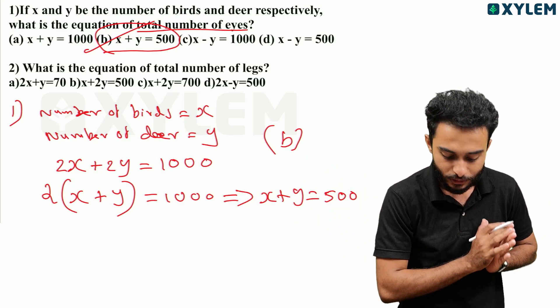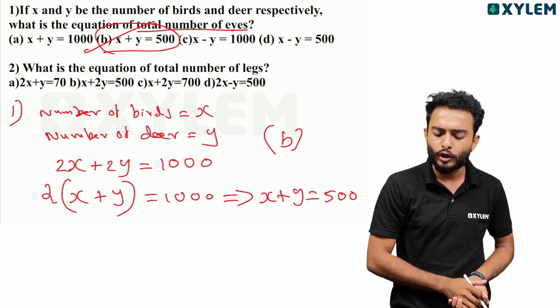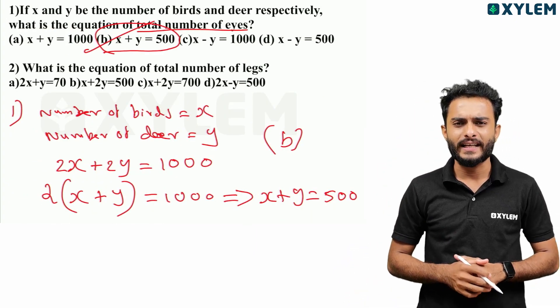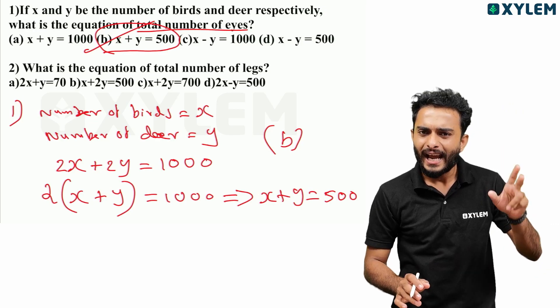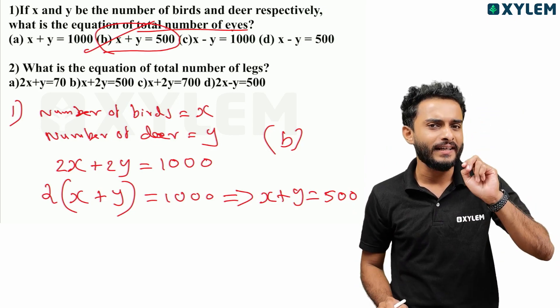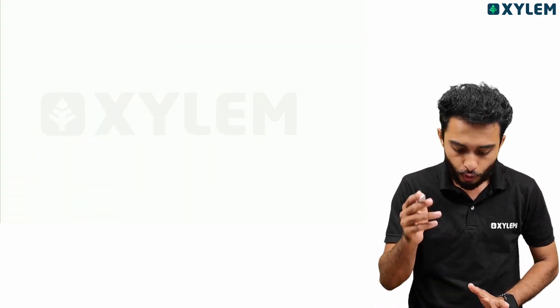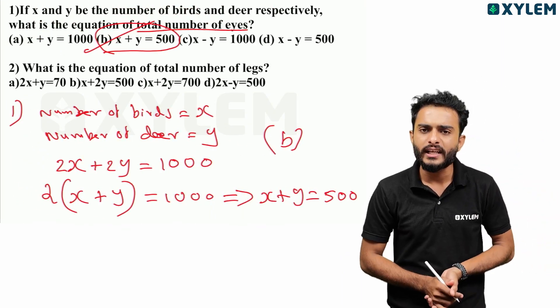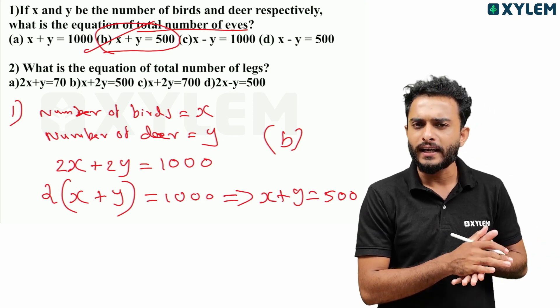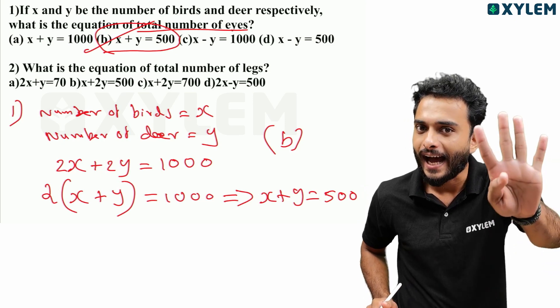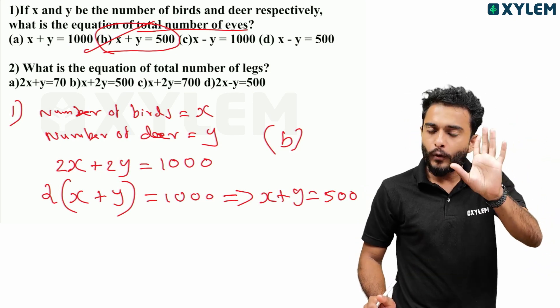Second question: what is the equation for the total number of legs? Total number of birds is x. Each bird has 2 legs, so birds contribute 2x legs. Total number of deer is y, and each deer has 4 legs, so deer contribute 4y legs.